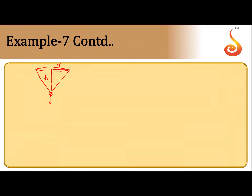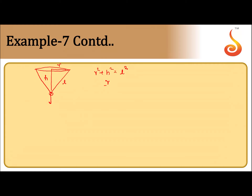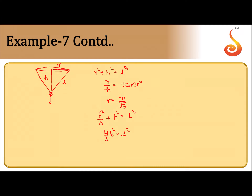Here r is the radius, h is the height, and l is the slant height. We have r² + h² = l² from the Pythagorean theorem. Since the semi-vertical angle is π/6, r/h = tan 30° = 1/√3, so r = h/√3. Substituting into the Pythagoras theorem: h²/3 + h² = l², giving 4/3·h² = l², so h = l√3/2.